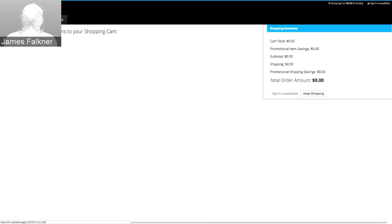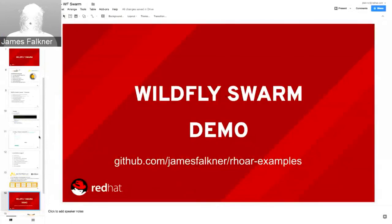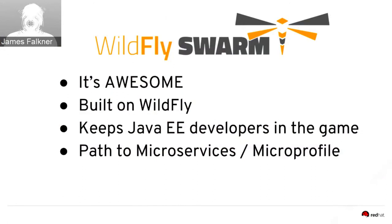That's it for the demo. All of this code is on GitHub, and there's a solution branch that gives the complete code so you can get started quickly. Switching back to the final summary slide: WildFly Swarm is super awesome, built on the upstream WildFly Java EE community. It keeps Java EE developers in the game — if you have Java EE expertise and want to use it in a microservice, cloud-native world, WildFly Swarm is a great option. It also implements standards like MicroProfile, which has a huge community and a lot of momentum.